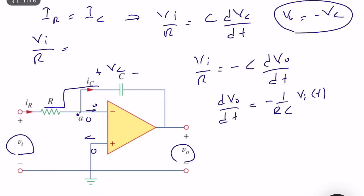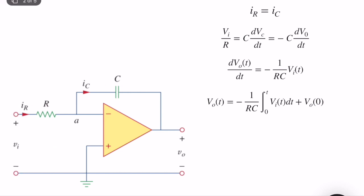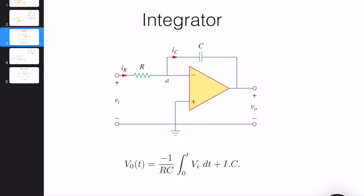So derivative of Vo is equal to an expression that depends on Vi. So if we integrate both parts, we can easily see that Vo is equal to zero to t minus 1 over RC, Vi times dt plus initial condition Vo zero. So let's look at the clean result. As you can see, output voltage is equal to a constant, which is minus, but not critical. We can always change minus with the inverting amplifier. But technically, it integrates the input voltage to find the output voltage. So the circuit is an integrator.